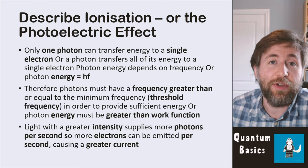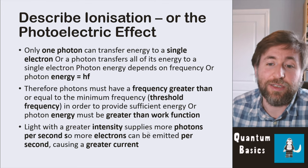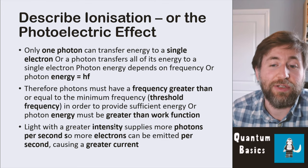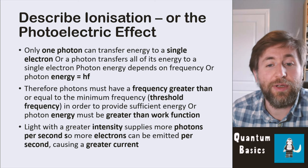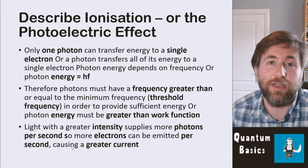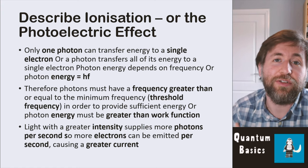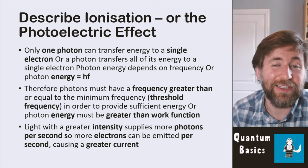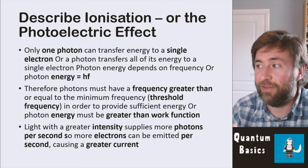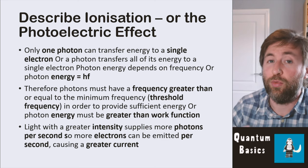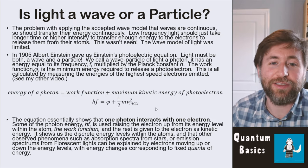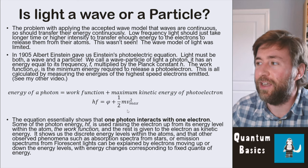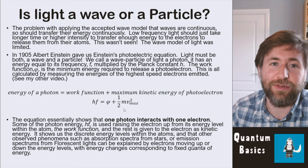Light with greater intensity supplies more photons per second, so more electrons are released — a higher rate, causing a greater current. The key observation in the photoelectric effect is that for greater intensities of light below the threshold frequency, you don't get any released photoelectrons — no electrons emitted from the surface. This is the key evidence that light is both a wave and a particle. Einstein's photoelectric equation states that the energy in a photon equals the work function plus the kinetic energy the photoelectron has when emitted from the surface.